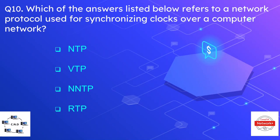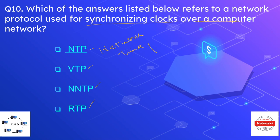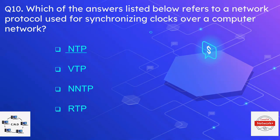Question number ten is: which of the following refers to a network protocol used for synchronizing clocks over a computer network? The options are NTP, VTP, NNTP, or RTP. The correct option is NTP — Network Time Protocol — which is used to synchronize clocks over a network.